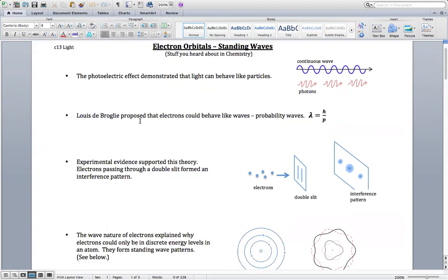Louis de Broglie proposed that electrons could behave like waves, probability waves. That's his formula: you take Planck's constant and divide by the momentum to get the wavelength. Momentum is mass times velocity. The bigger the velocity, the shorter the wavelength.